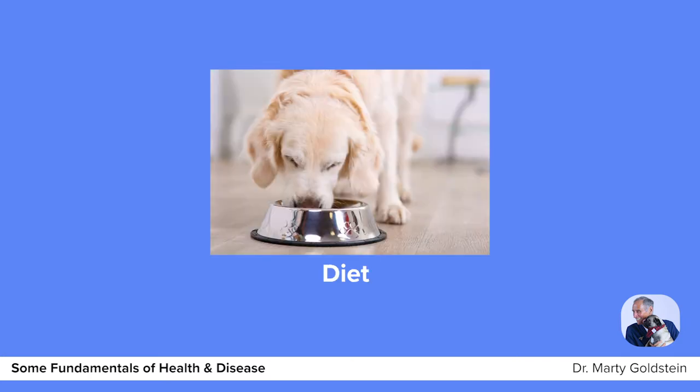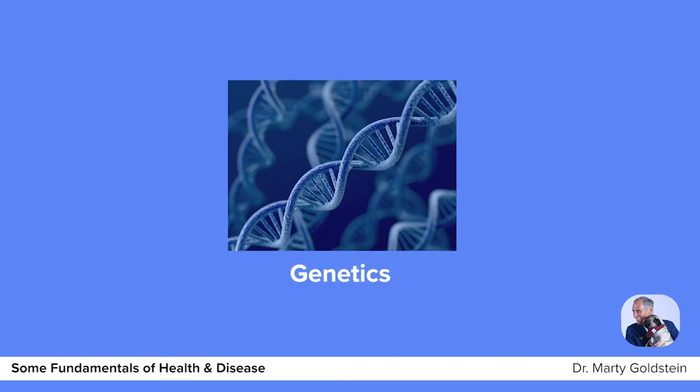Diet — not going to get too much into diet because other presentations will cover that. And unfortunately, genetics. We've made so many mistakes in healthcare for so many decades that on the genetic line, we commonly see young dogs, even down to three months of age, with terminal cancer — born either with a tumor or the predisposition to rapidly form one.